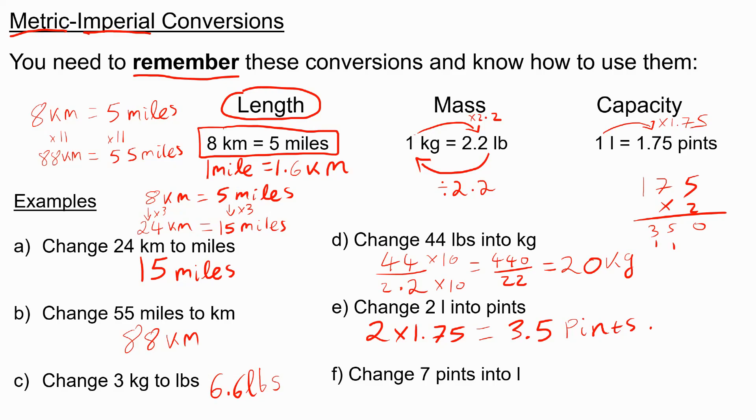Finally, if I want to go back, so if I want to go from pints to liters, you need to divide by 1.75. So if I wanted to change 7 pints into liters, I would have to do 7 divided by 1.75.